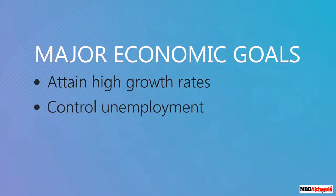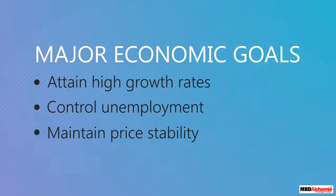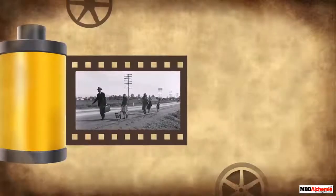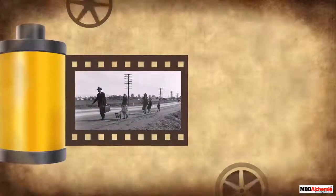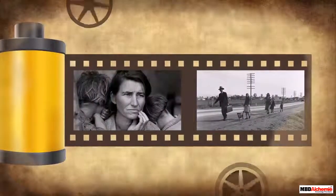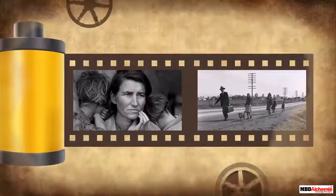Policy makers have three major economic goals: attain high growth rates, control unemployment, and maintain price stability. Macroeconomics was not considered a serious subject until the Great Depression in the 1930s.